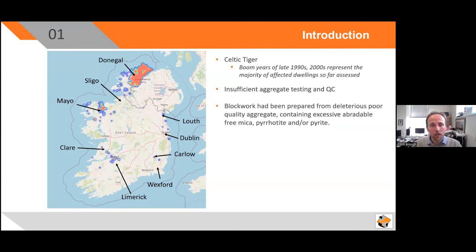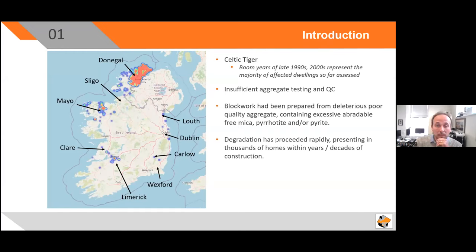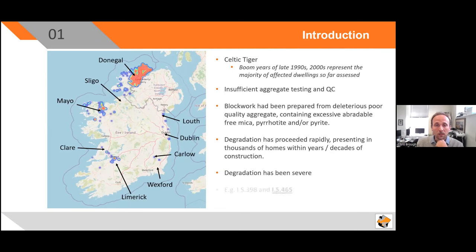It originates from the boom years of the late 1990s and 2000s, where defective block work or insufficient aggregate testing appears to have taken place. Defective aggregate containing excessive abradeable free mica, pyrrhotite, and pyrite was used in block work. Degradation has in some cases proceeded rapidly, presenting in thousands of homes within years or decades of construction, and in some instances, as shown in the pictures in previous presentations, degradation has been severe. Standards have now come into play specifically dealing with the use of dated-tier aggregates: IS-398 covers the use of hardfill, and IS-465 obviously relates to block work.